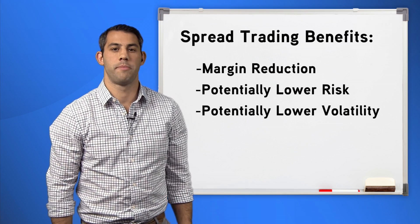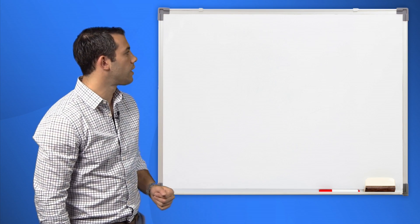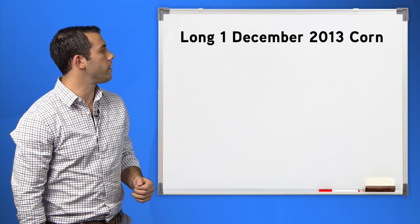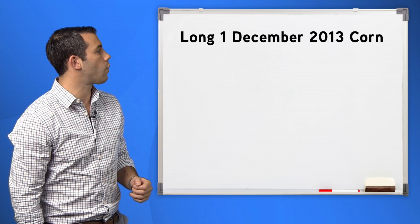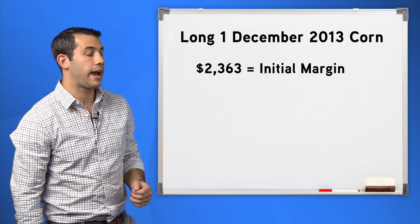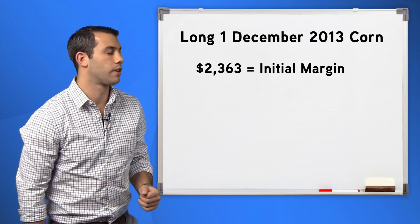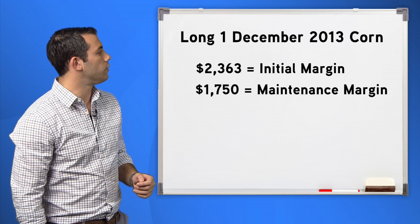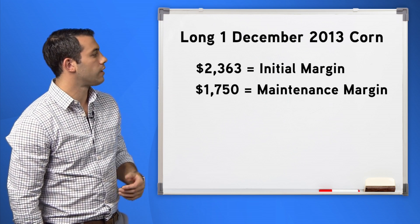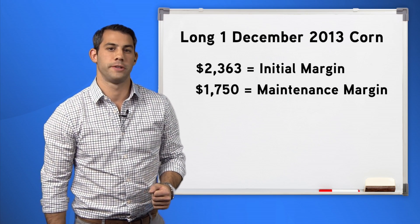Margin reduction is one benefit. Let's look at an example. The initial margin requirement to go long one December 2013 corn contract is $2,363 as of this recording. The margin is reduced to $1,750 if you carry the position into the next session. This is the maintenance margin.